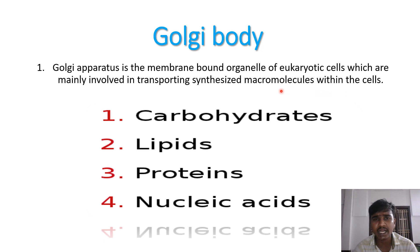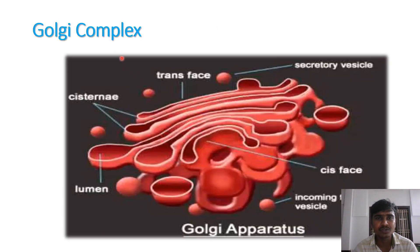The Golgi apparatus is mainly involved in transporting synthesized macromolecules within the cell. The macromolecules include carbohydrates, lipids, proteins, and nucleic acids. The Golgi complex has a trans face and a cis face, with secretory vesicles and cisternae.